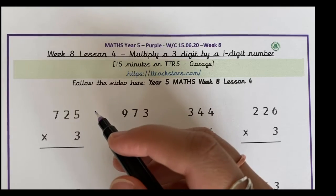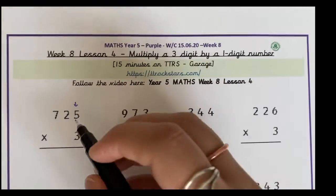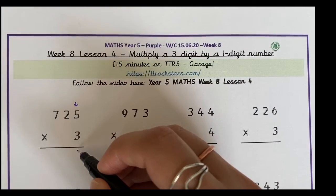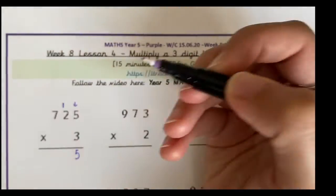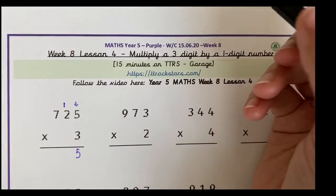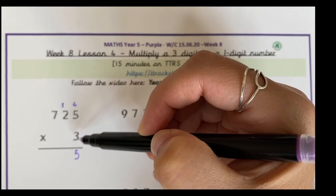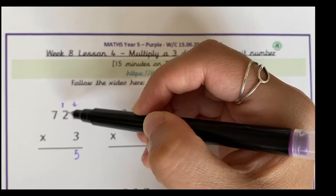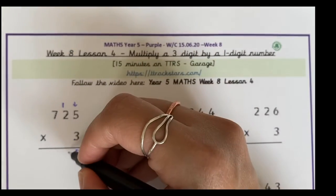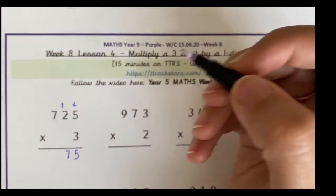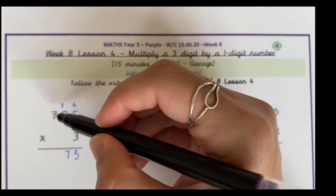I'm going to start by multiplying the 5 by the 3, so 5 times 3 is 15. Regroup the 1 into the tens column and then multiply the 2 by the 3. 2 times 3 equals 6. Add the 1 and it makes 7. So now we have 75.